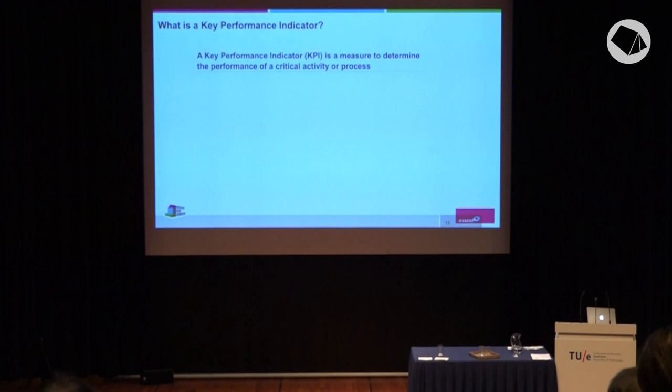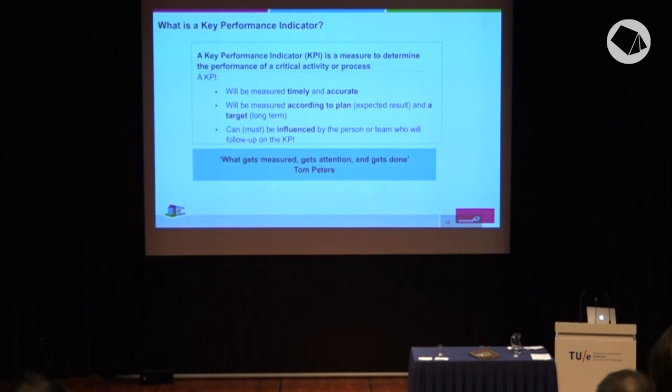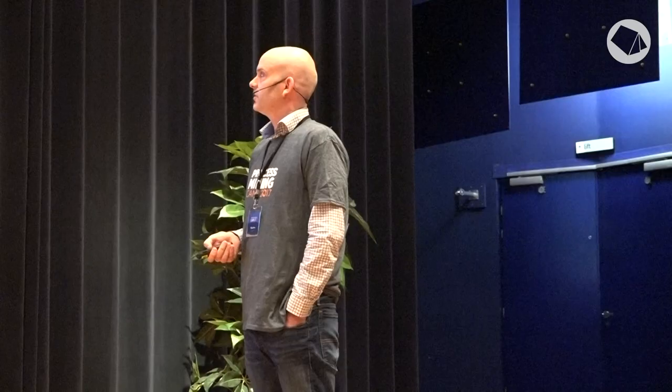We have some rules about KPIs. They must be measured timely and accurately, according to plan and against a target, with some long-term goal you want to reach. Importantly, a KPI must be influenced by the person or team who follows up on it — there's no use giving a KPI to someone who can't influence it. Finally, what gets measured gets attention and gets done. If you want to improve something, put a KPI on it, make somebody responsible, and the rest goes by itself.